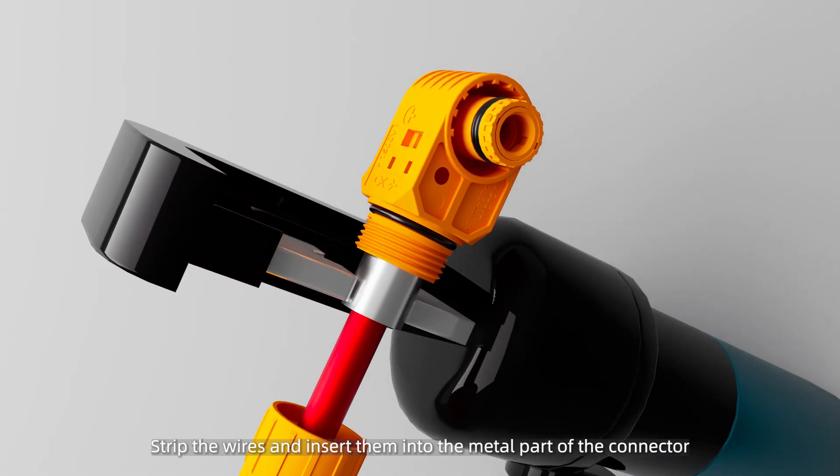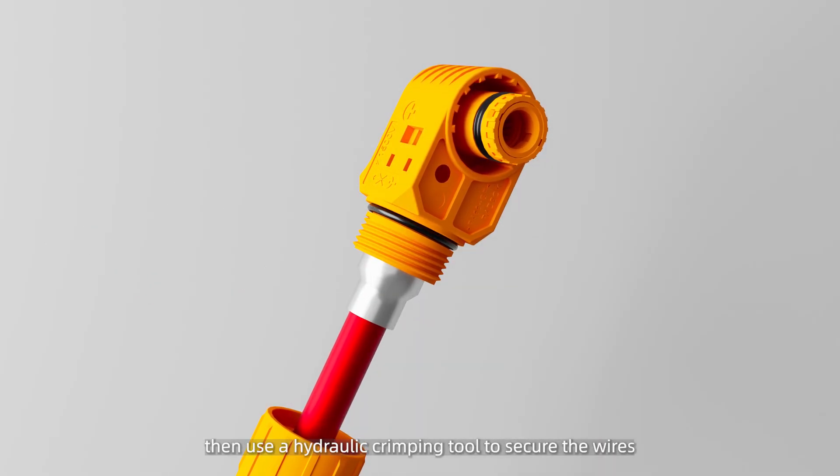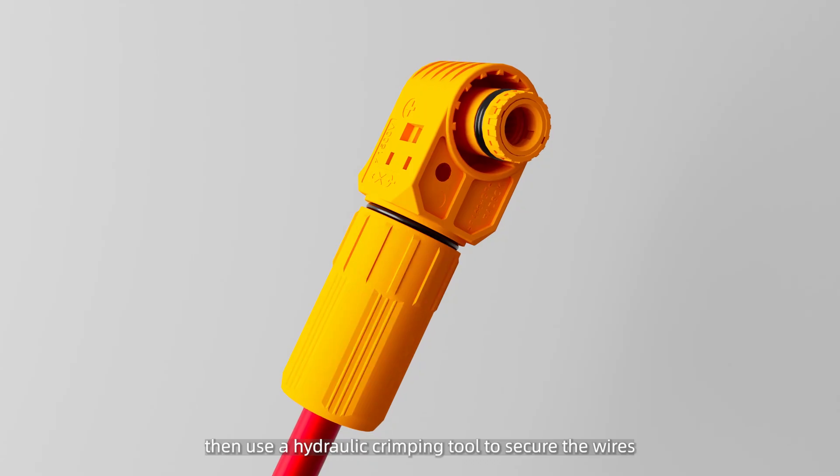Strip the wires and insert them into the metal part of the connector. Then use a hydraulic crimping tool to secure the wires. Due to product upgrades, select the appropriate installation method based on the actual product received.